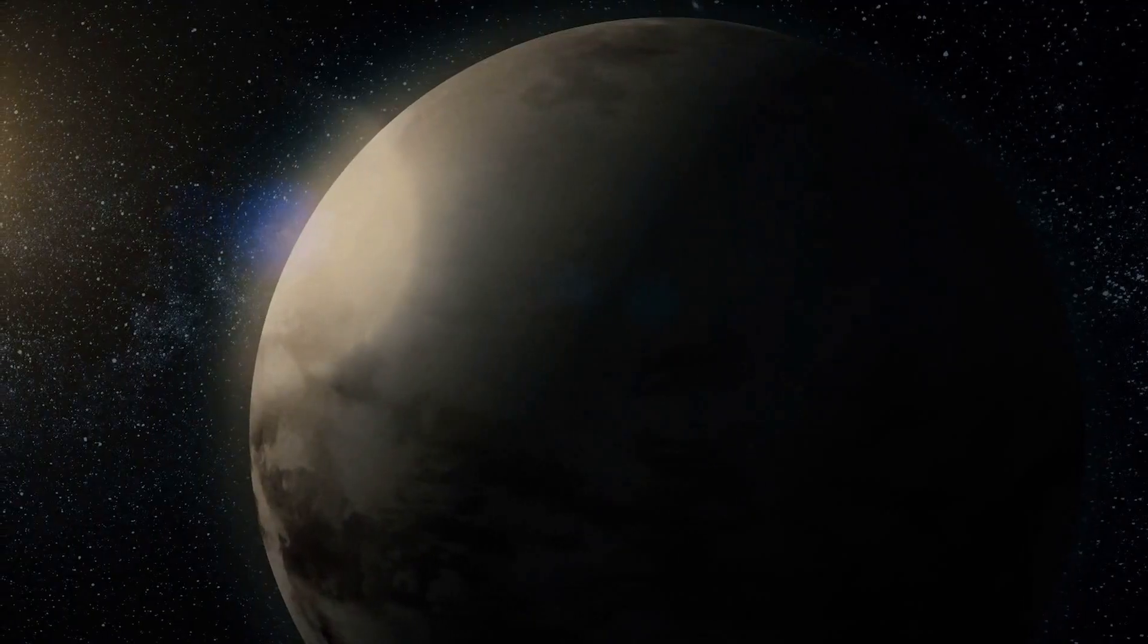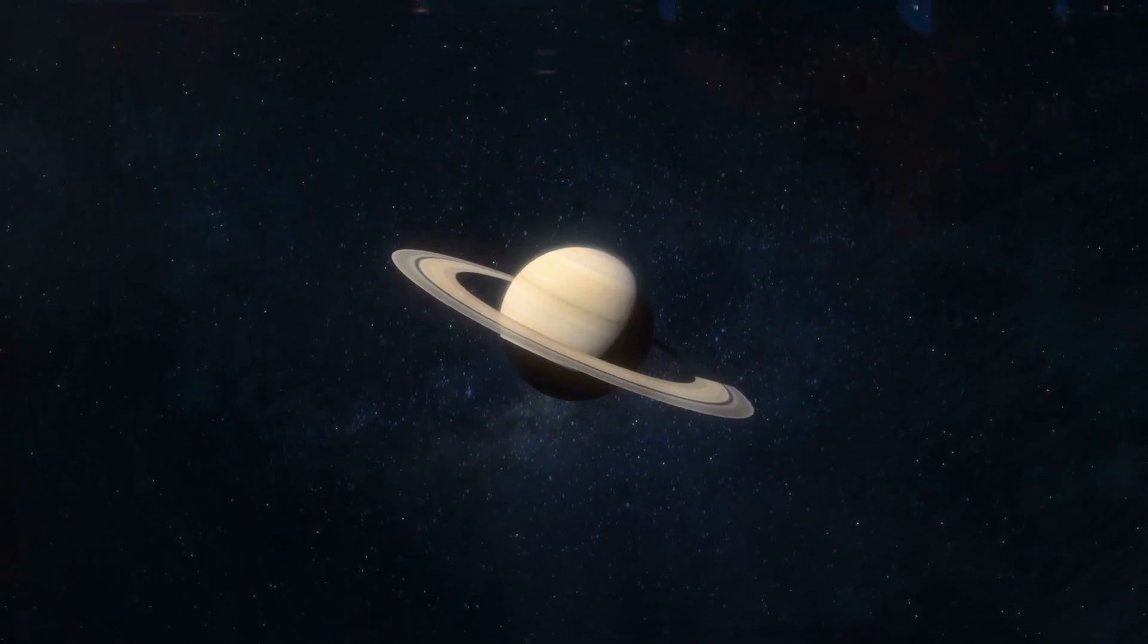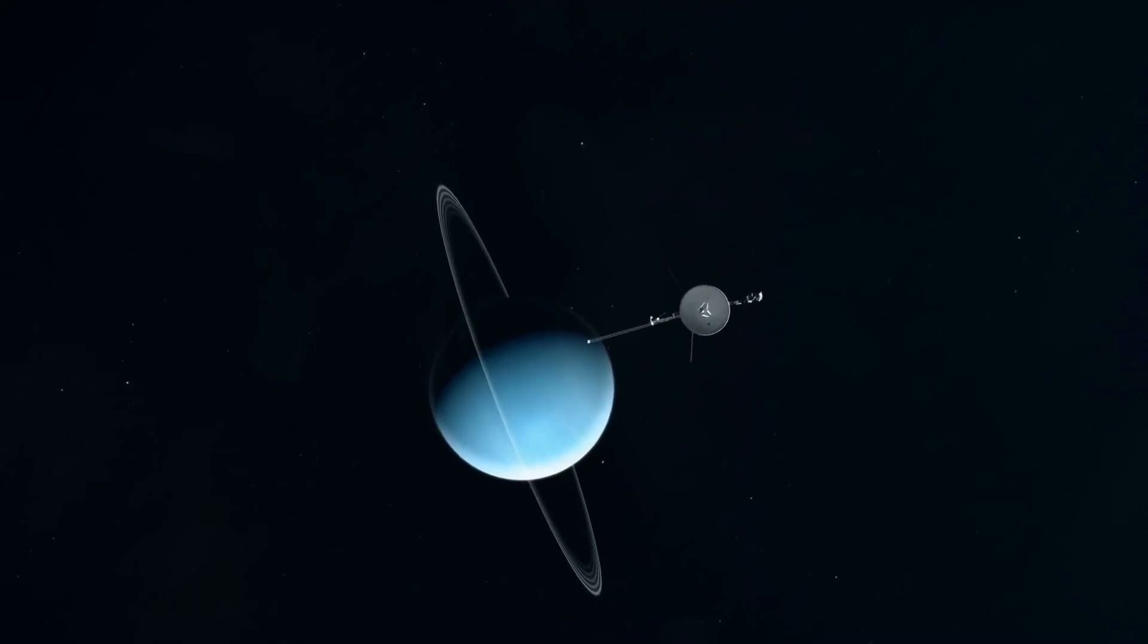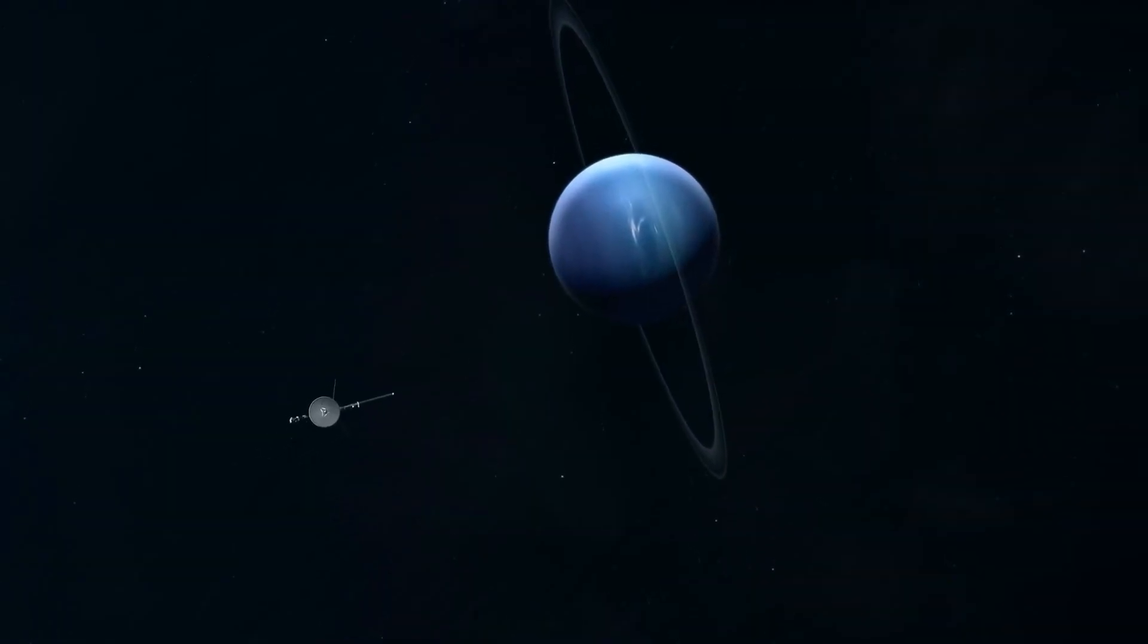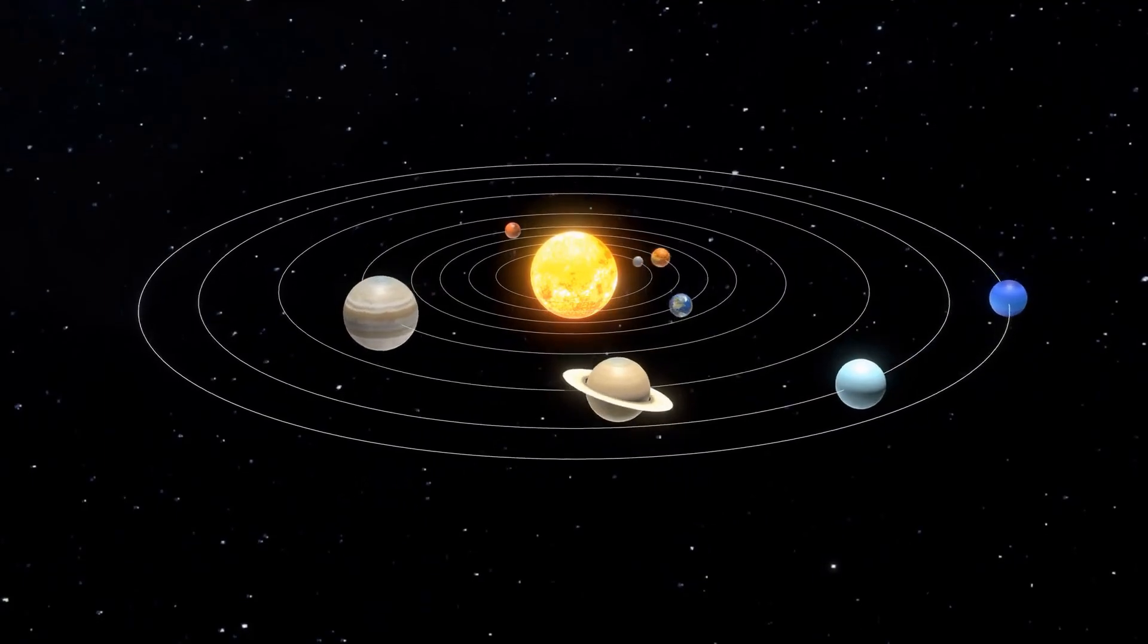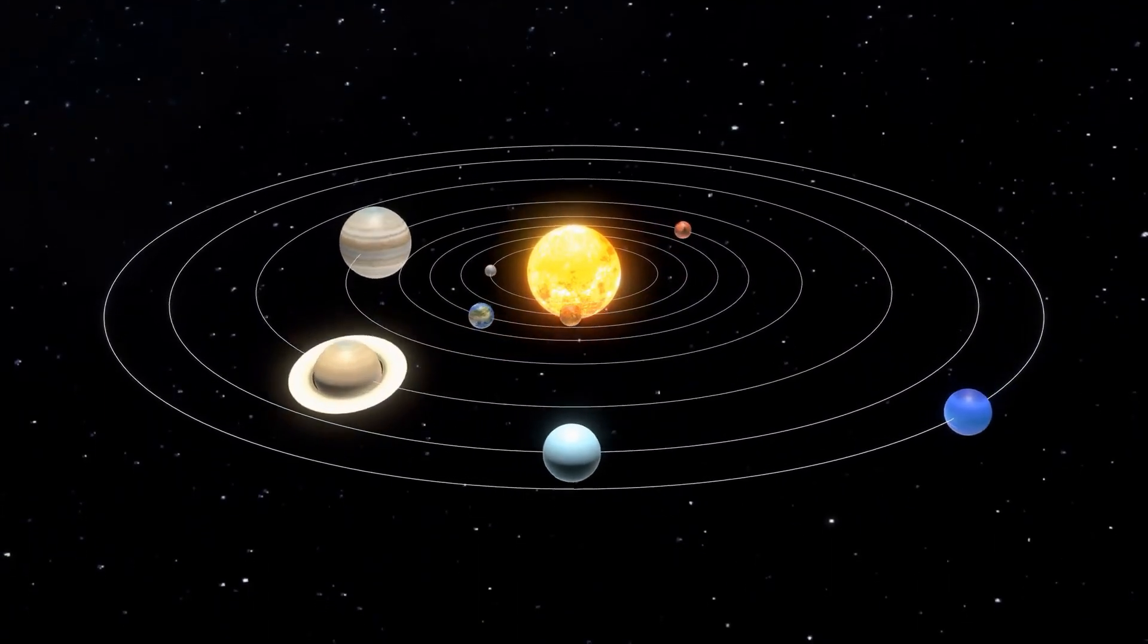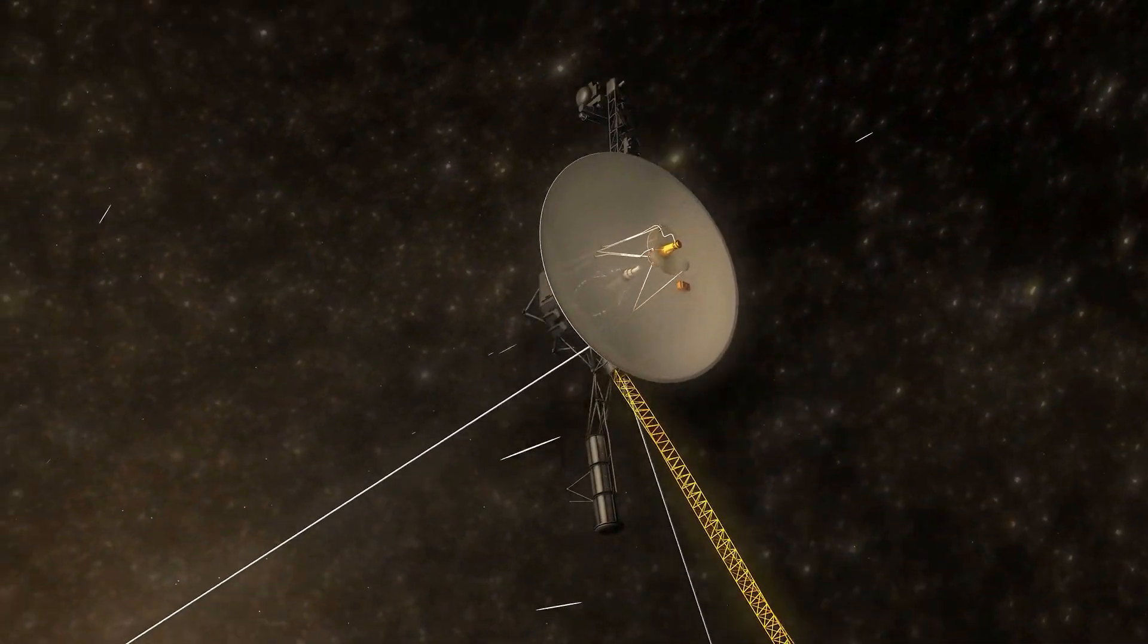Voyager 1 focused on Jupiter and Saturn, while Voyager 2 became the only spacecraft to visit Uranus and Neptune. Each flyby offered discoveries that reshaped our understanding of the outer solar system, solidifying the Voyager's legendary status.